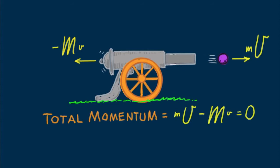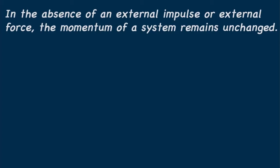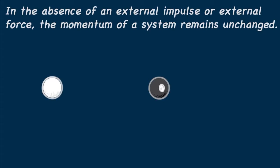In any interaction where no external impulse is exerted, momentum remains unchanged — we say momentum is conserved. This is called the conservation of momentum. In the absence of an external impulse or external force, the momentum of a system remains unchanged. Momentum conservation and the role of systems are nicely illustrated in the game of pool.